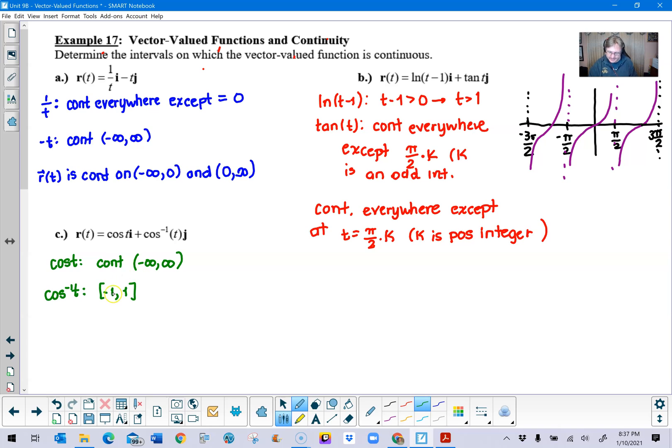And so basically, if you take the intersection of these two particular sets, you're going to see that r of t is continuous for the closed interval negative one to one.